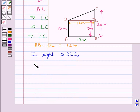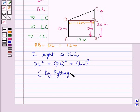In right triangle DLC, we have DC square is equal to DL square plus LC square. This is by the Pythagoras theorem that we have already stated.